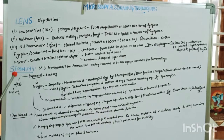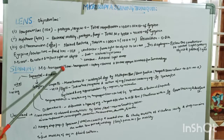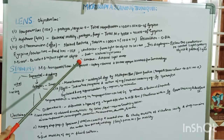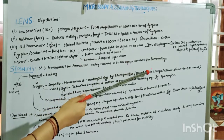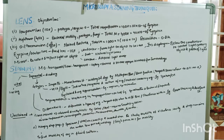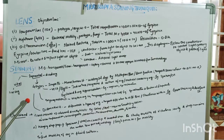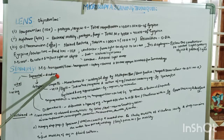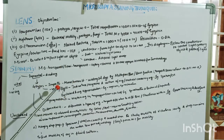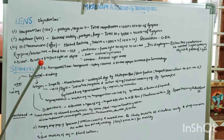Staining is done because microorganisms are transparent or semi-transparent. When stained, they become opaque and contrast from their surroundings, allowing us to study every part in detail. Staining is of two types: vital staining, where living organisms are stained, and supra-vital staining, where dead organisms are stained. Supra-vital staining is divided into four types: simple staining, negative or background staining, impregnation staining, and differential staining.